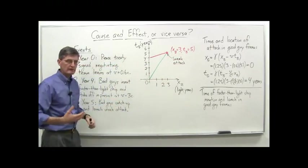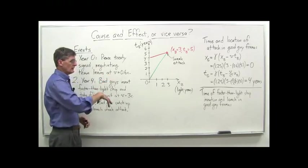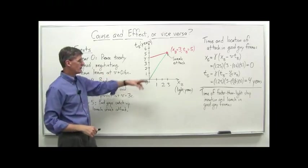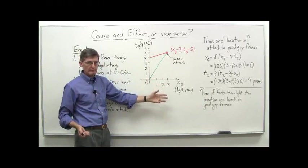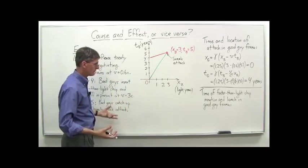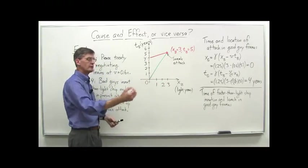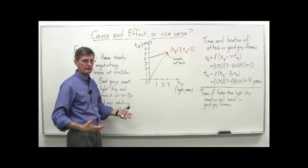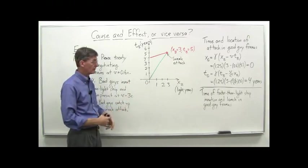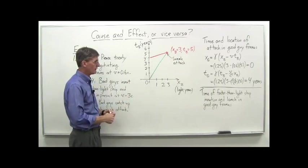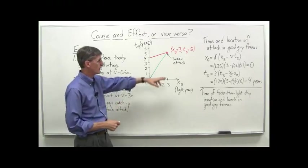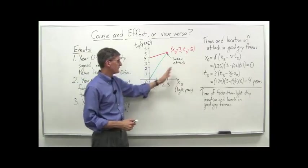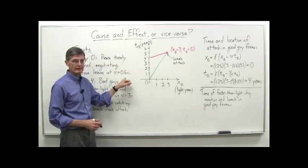And what we'd like to figure out is what is the time and location of this attack in the good guys' frame of reference, where they assume they're on their ship. They actually see the home planet receding away from them. They consider themselves at rest or can consider that. And let's just do the Lorentz transformation and see what we get here.